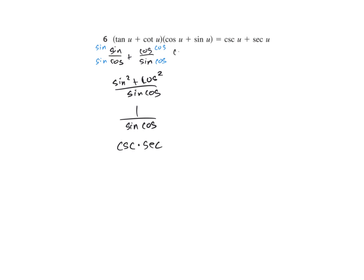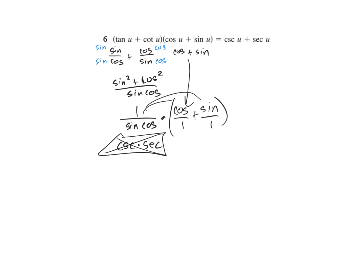Now let's do the other one. We have cosine plus sine. Pulling this down, cosine over 1 plus sine over 1, and distribute this through. On the first distribution, cosine cancels, leaving 1 over sine. On the second, the sines cancel, leaving 1 over cosine. That gives cosecant plus secant, which is our answer.